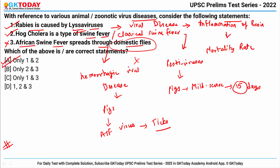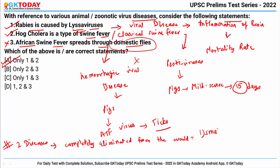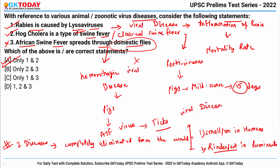Apart from these, two diseases have been completely eliminated from the world: first, smallpox in humans, and second, rinderpest in ruminants. Rinderpest is a viral disease that affects cattle and causes very high death rates.